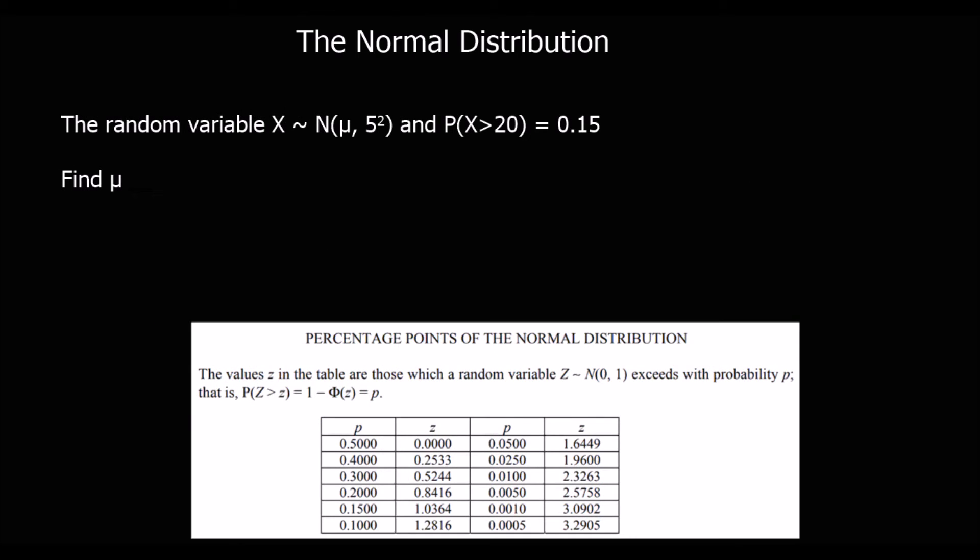Okay, here's a slightly different question. If you want to pause the video and try and give this one a go, you can. Otherwise just keep watching. So this time we haven't been told the mean, so we don't know the mean, but we know the standard deviation this time is 5. And we know that the probability of being more than 20 is 0.15, 15%.